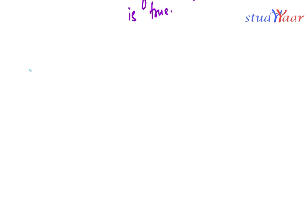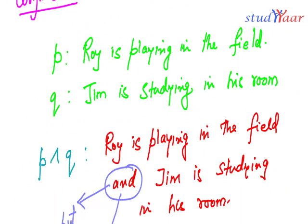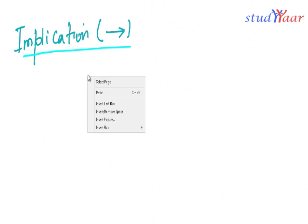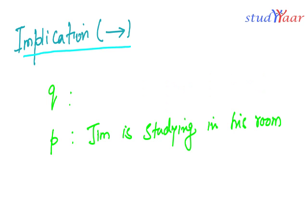Now let's talk about the next connective: implication. The symbol for implication is an arrow. Let's define P as 'Jim is studying in his room' and Q as 'Jim will pass the exam tomorrow.'